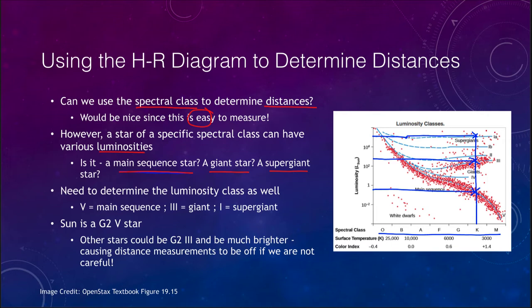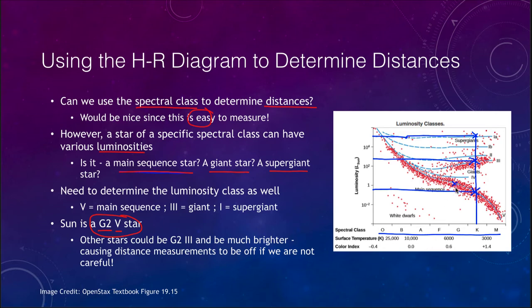We need to classify a star completely. For example, the Sun is specifically a G2 star — a sub-classification — and it is luminosity class five, given by the Roman numeral V. That classifies it very specifically and tells us where it falls on the HR diagram. If we can get a complete two-dimensional classification using G2 and the luminosity class, that determines where the star would be. A G2 main sequence star would be in one position, but a G2 luminosity class three giant star would be up higher, and misclassifying it can make a significant difference in the determination of the distance.